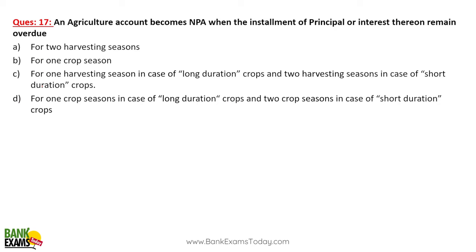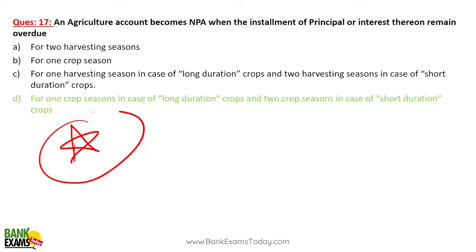In agriculture, an account becomes NPA when the installment remains overdue for one crop season in case of long duration crops, or two crop seasons in case of short duration crops. This question was asked in the previous paper — it is a star question that has appeared in past exams.